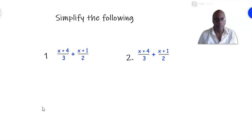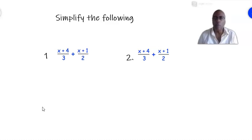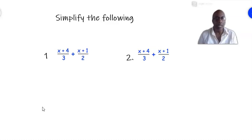In example one, we have to add the fractions (x + 4)/3 plus (x + 1)/2. The denominators are numbers, so we proceed as before — we draw a line underneath and find the LCM of 3 and 2, which is 3 times 2, which is 6.